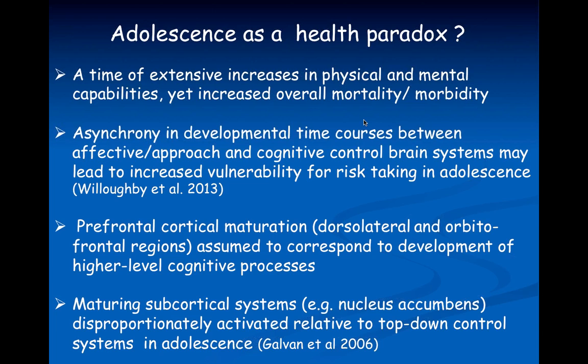Prefrontal cortical maturation — in both the dorsolateral regions and the orbitofrontal region — corresponds to the development of higher-level cognitive processes. The maturation of subcortical brain systems, like the nucleus accumbens, are particularly activated relative to these top-down control systems in adolescence. I'll show you some data from a functional neuroimaging study on this.